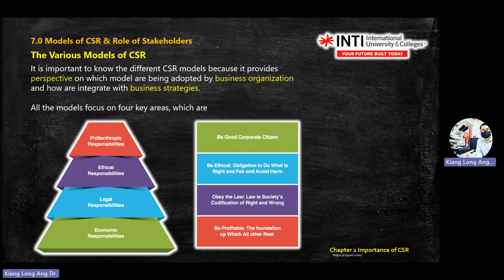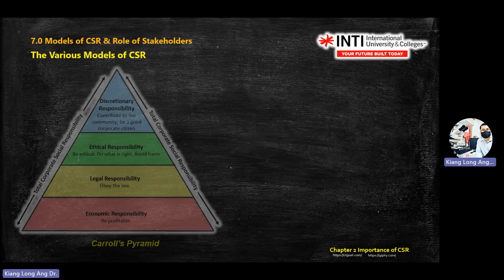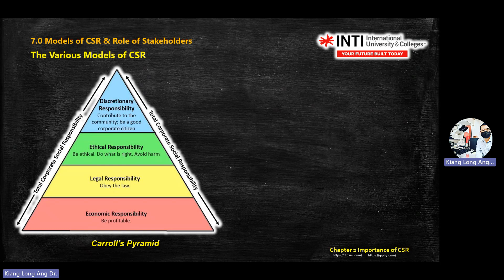The first model is triangular, which links with the word pyramid. The content inside the pyramid is still the same — philanthropic, ethical, legal, and economic. In this triangular shape, you look at the size of each color layer. If at the bottom there's a bigger size, it means the company gives priority to the economic dimension.